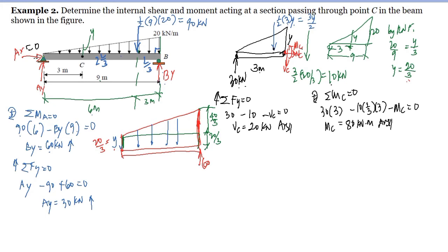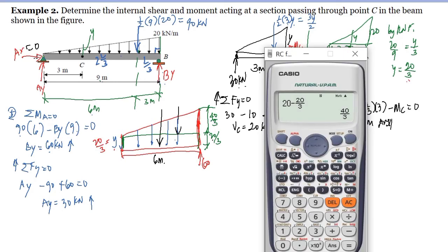Now computing the resultants of the loads on the right portion. There are two resultants: one for the rectangular load and one for the triangular load. The section from C to B is 6 meters in length. For the rectangular load resultant, the area of the rectangle has height 20 over 3 and length 6 meters. So 6 times 20 divided by 3 equals 40 kilonewtons.